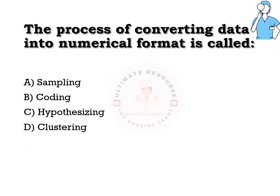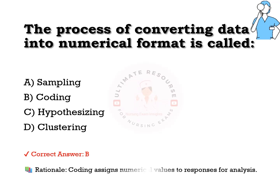The process of converting data into numerical format is called: options are a) sampling, b) coding, c) hypothesizing, d) clustering. The answer is b) coding. Coding assigns numerical values to responses for analysis.